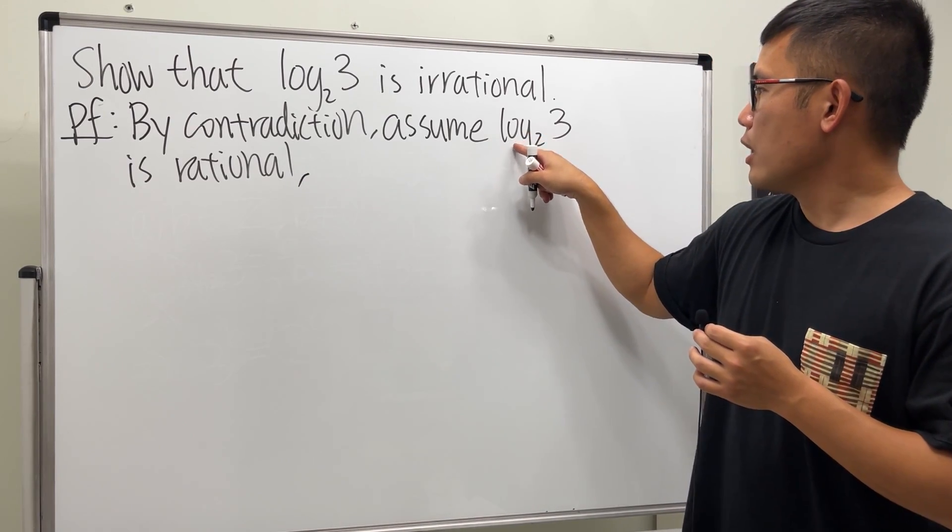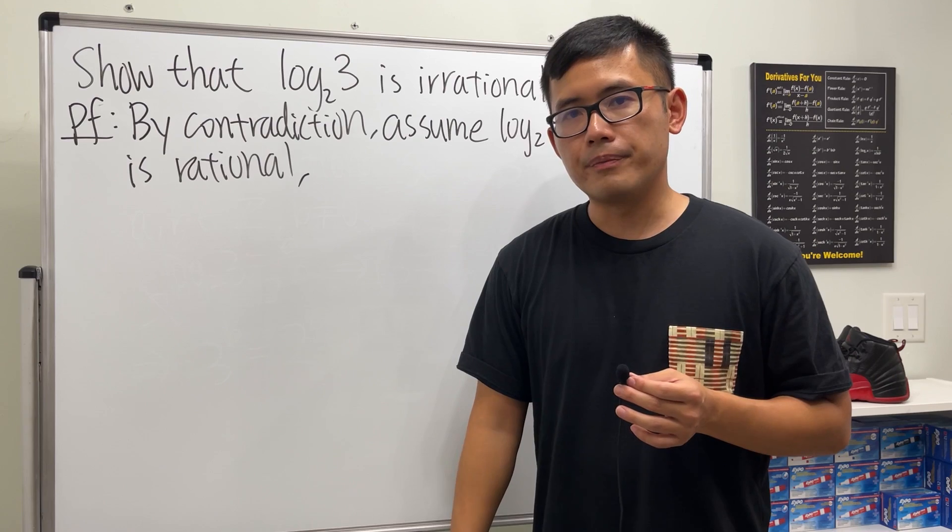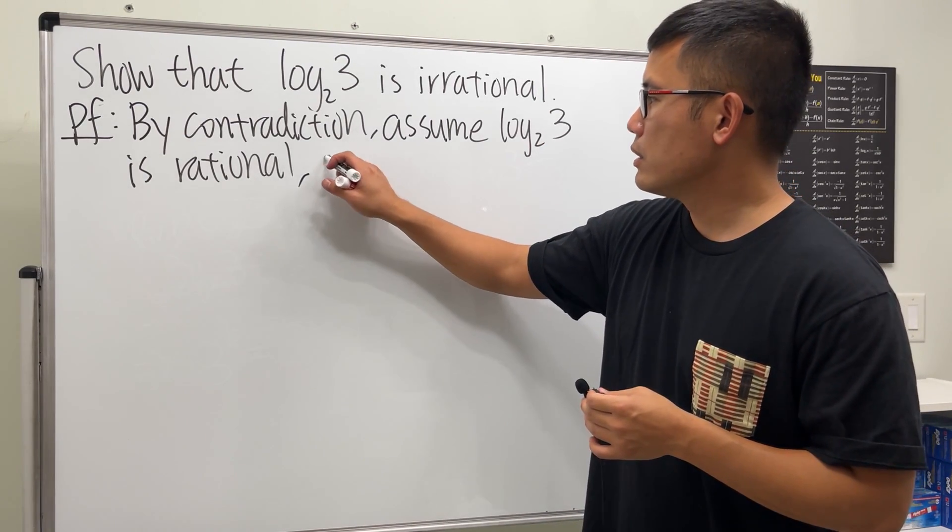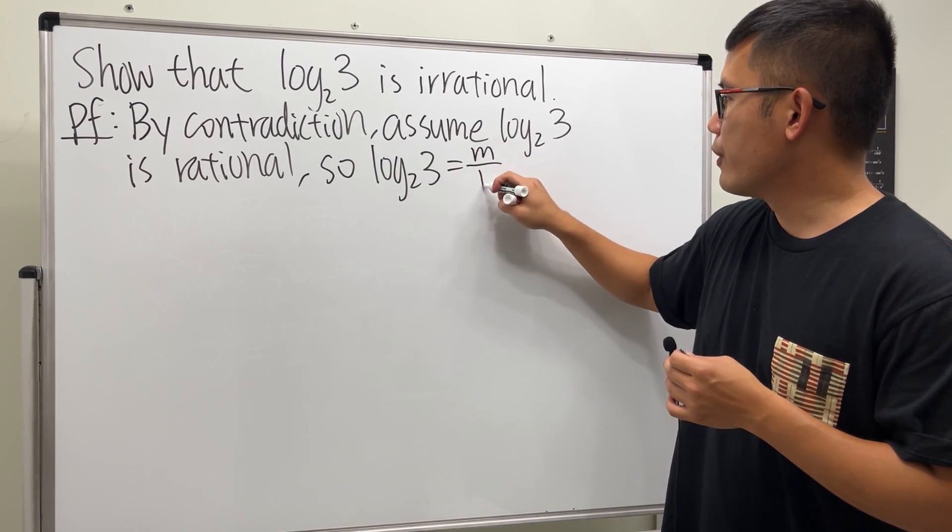Well, if we know log base 2 of 3 is rational, what's the definition of a rational number? It has to be a ratio of two integers, right? So we can write log base 2 of 3 as m over n.